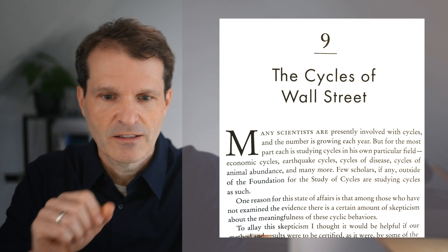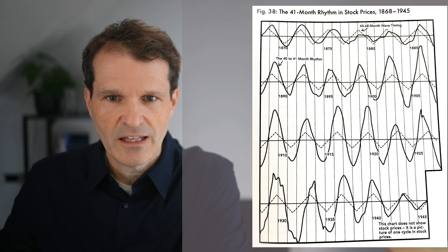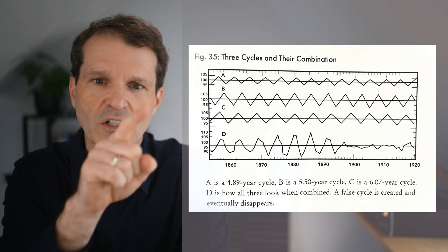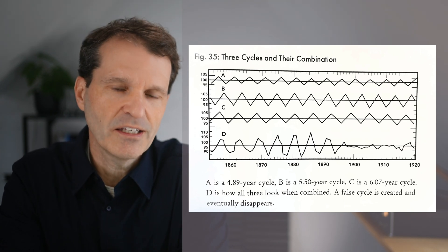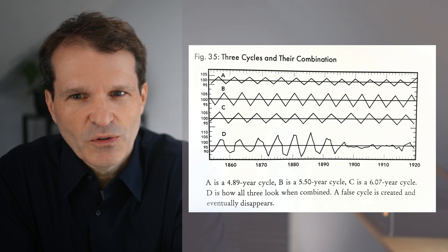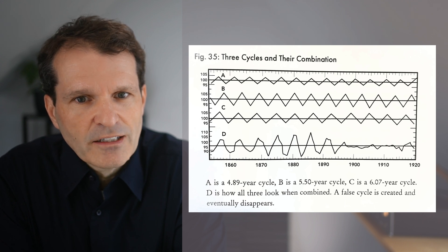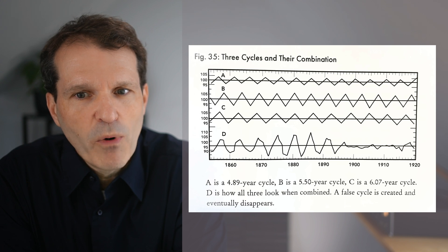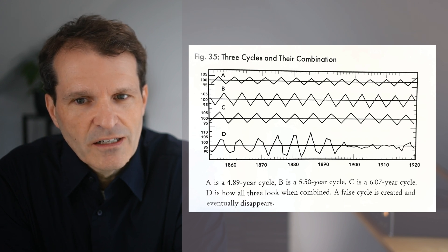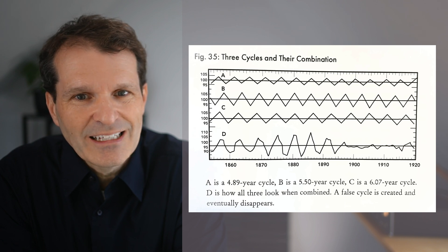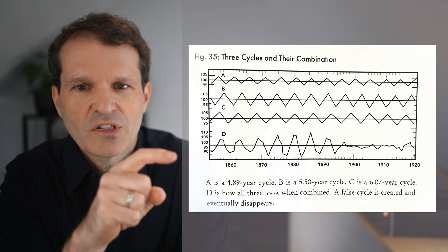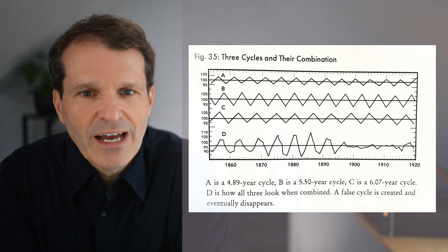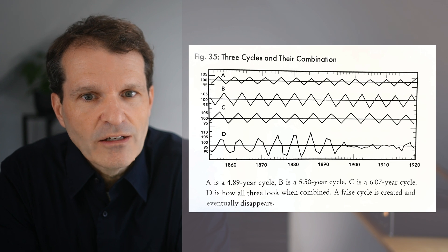There's a finding about the concept of false cycles. This is an original chart he used in his book. You see three cycles from the top to the bottom—A, B, C—and at the bottom you see cycle D.